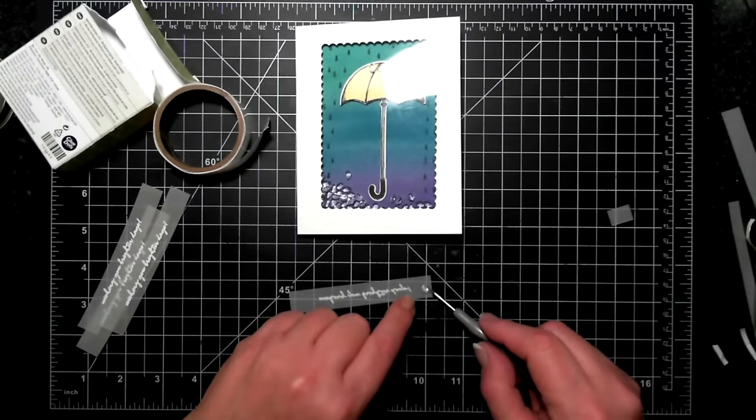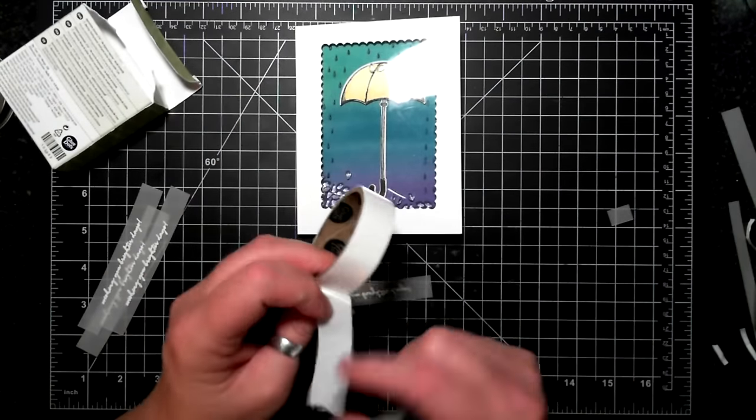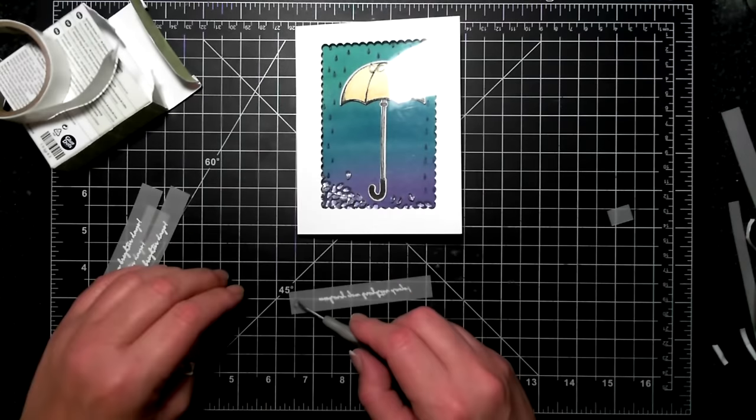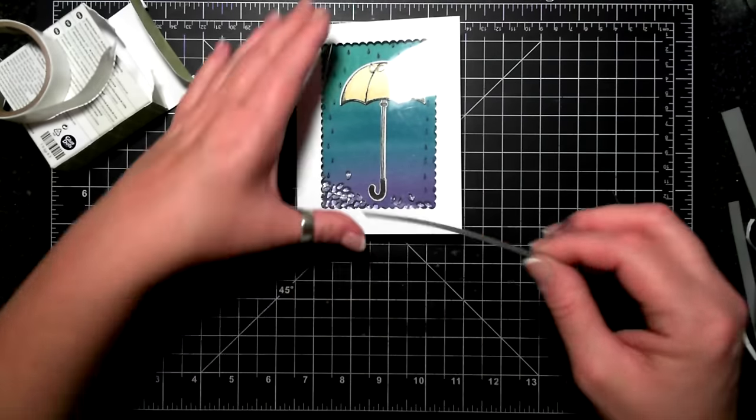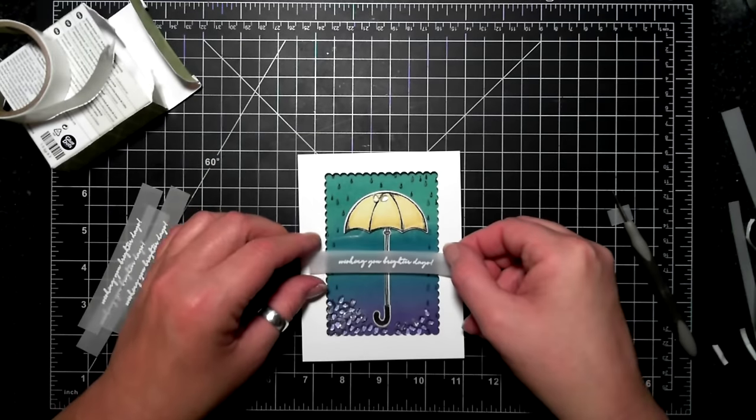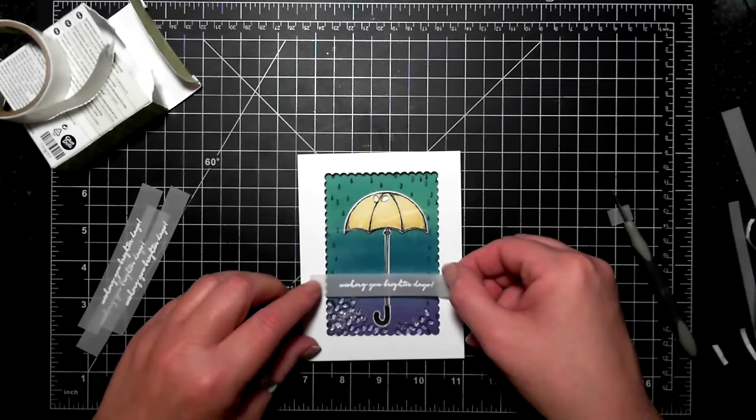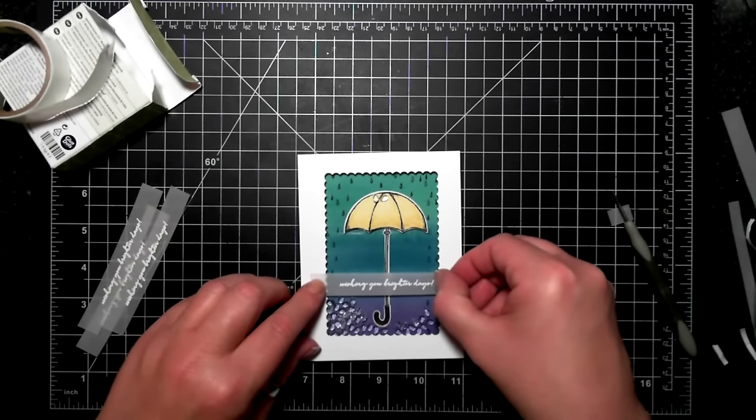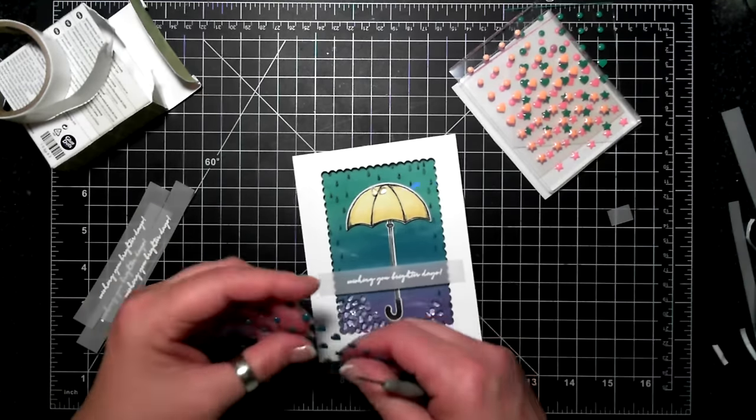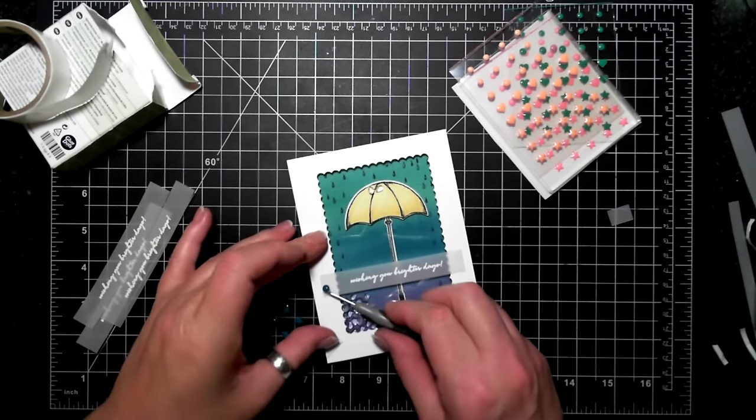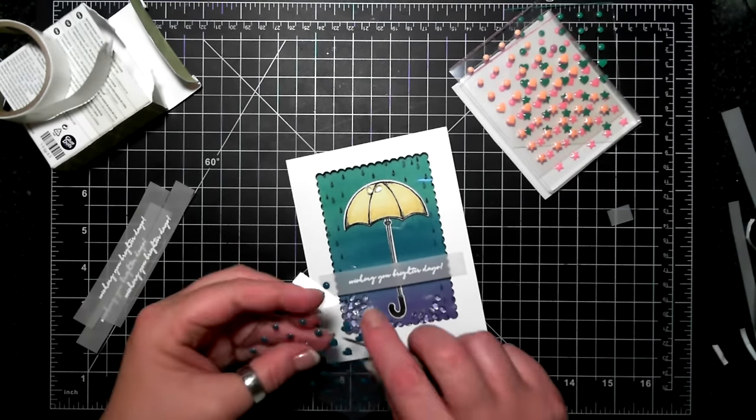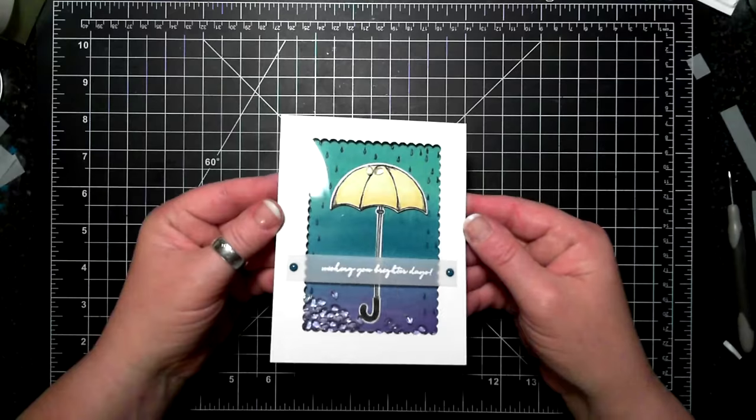I'm adhering it on a little bit of vellum and there goes my glue dots. As soon as I can find a place for that to live I will be applying the in-color enamel shapes. I believe I chose Dapper Denim just to hide the glue dots and here's my shaker card. Thanks so much for joining me. I'll catch you next time. Bye!